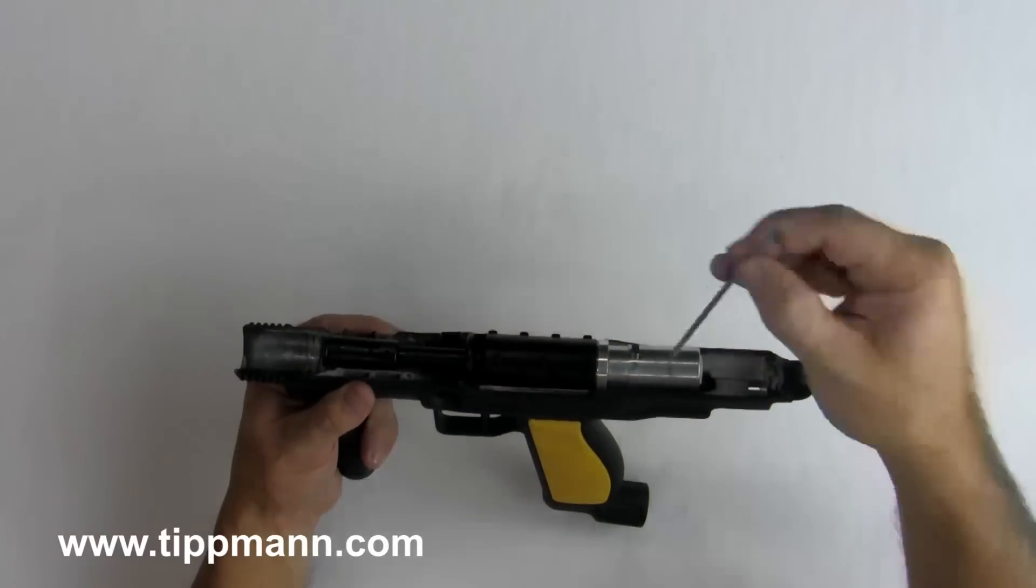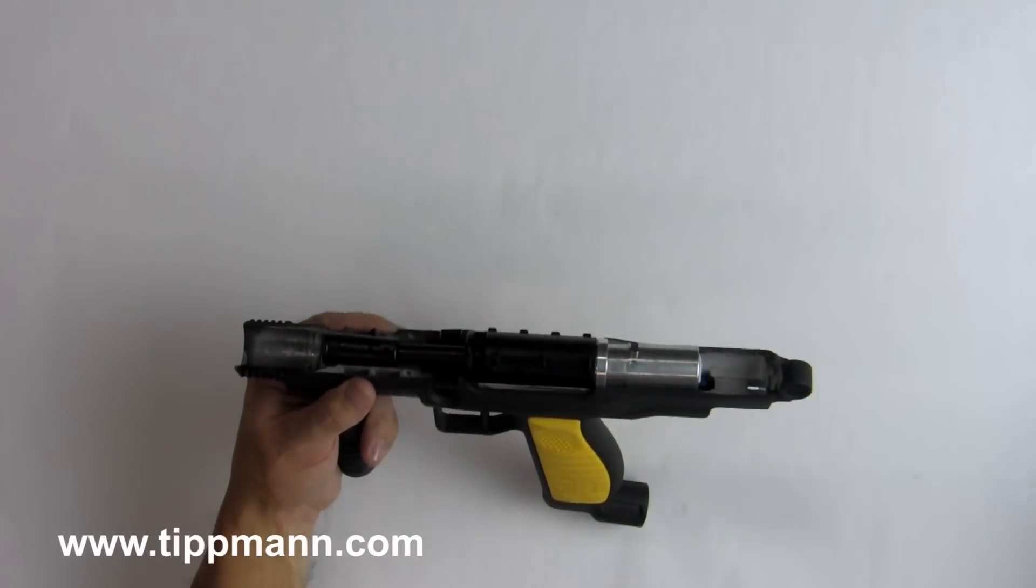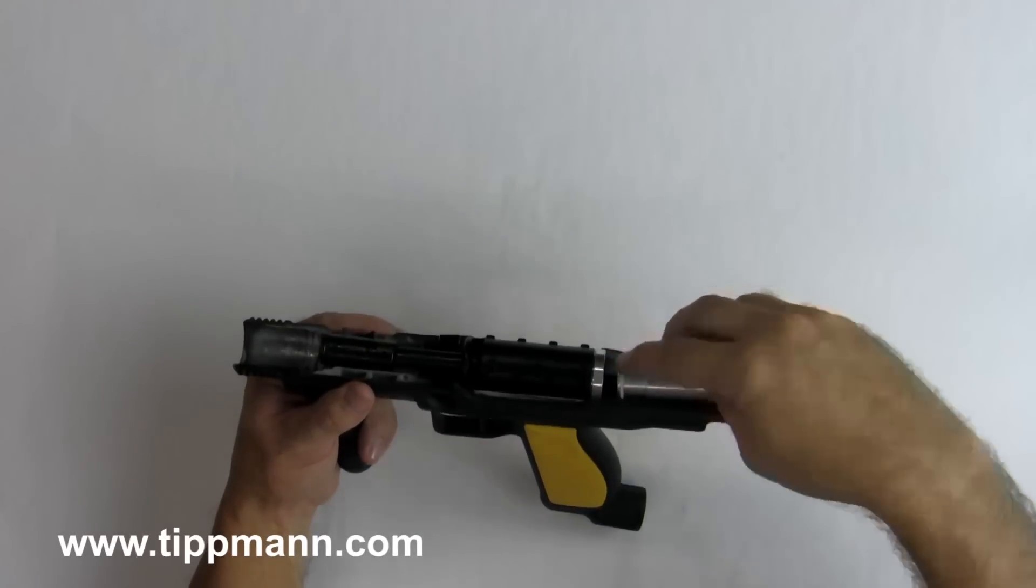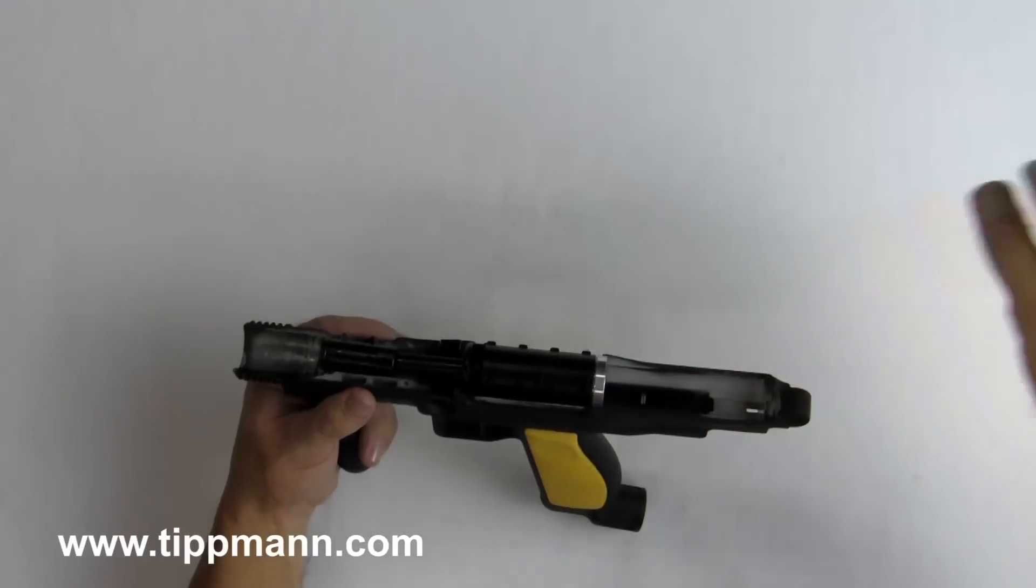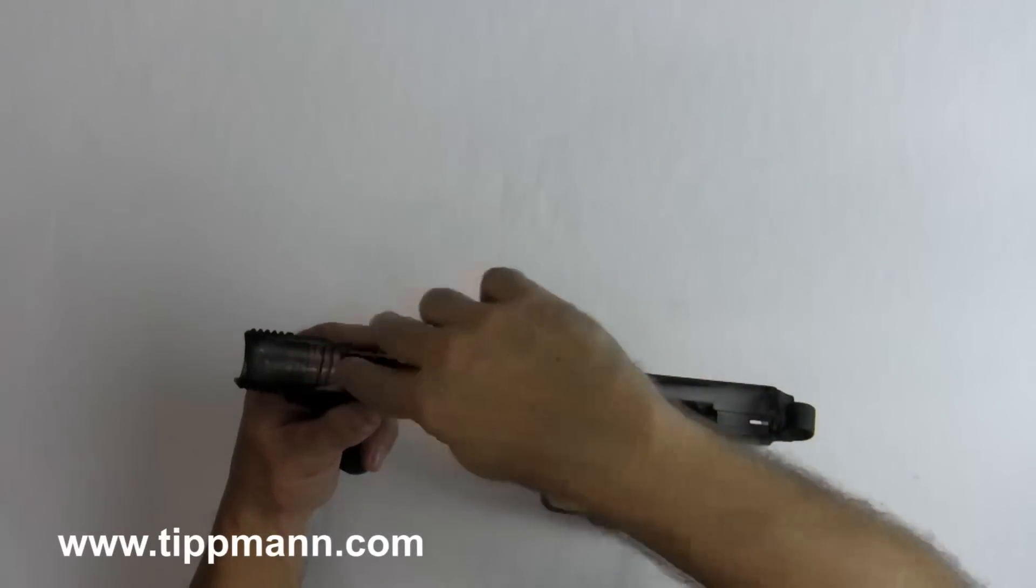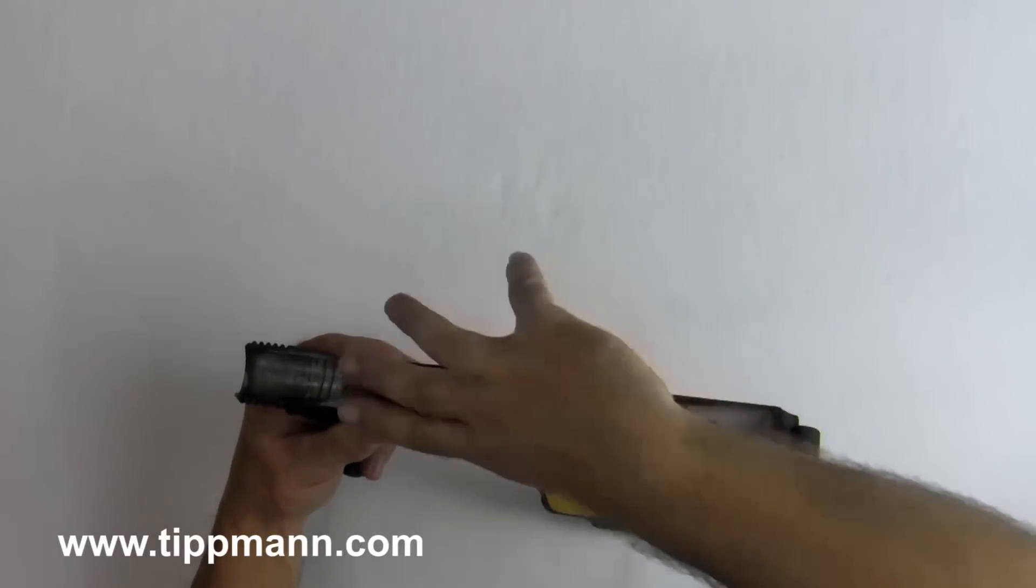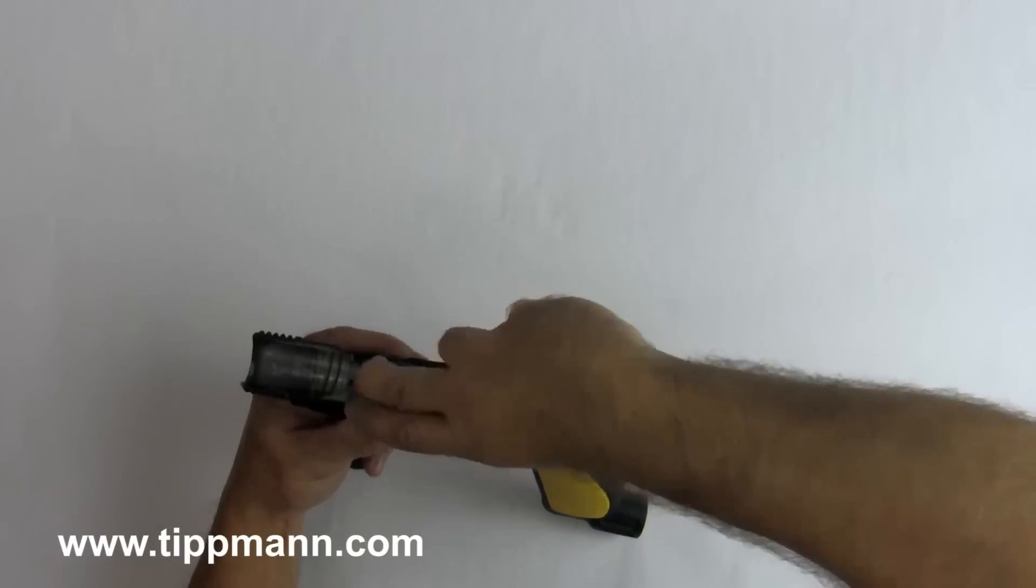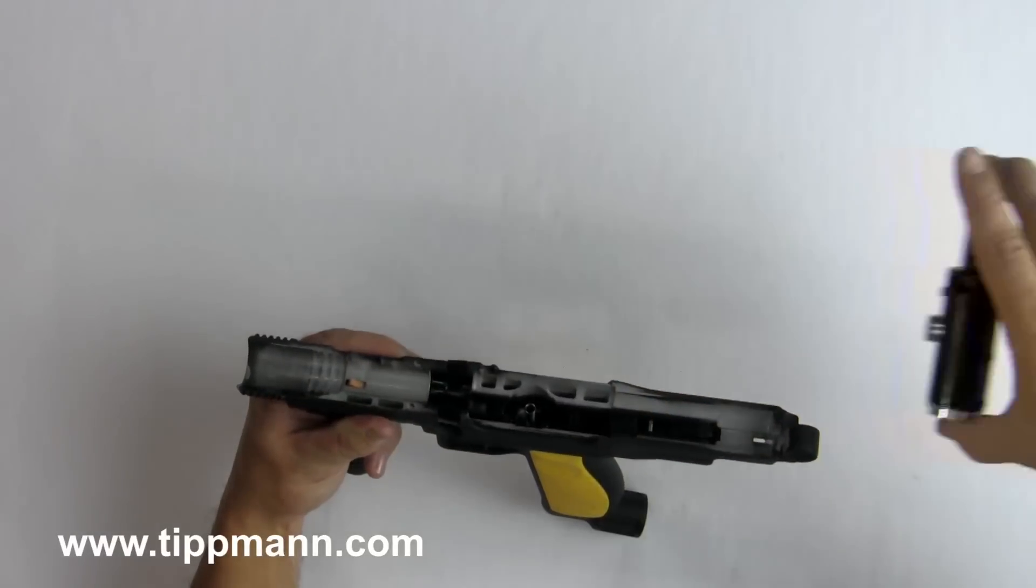The linkage arm, the rear bolt comes out, and the power tube, valve body, and front bolt can come out.